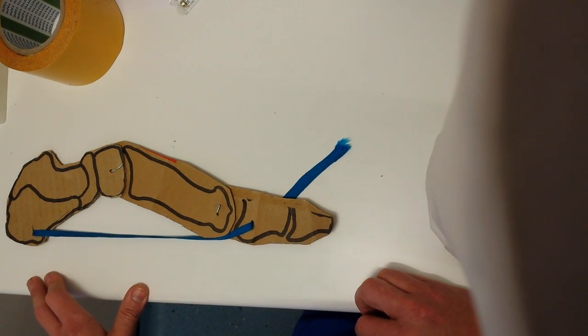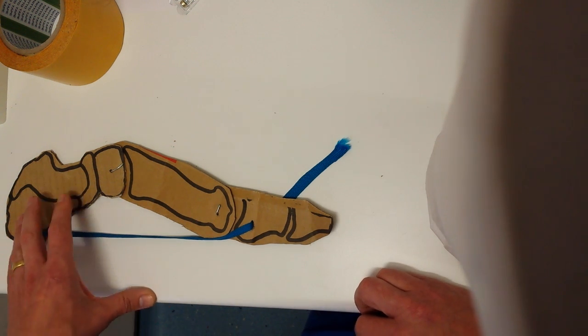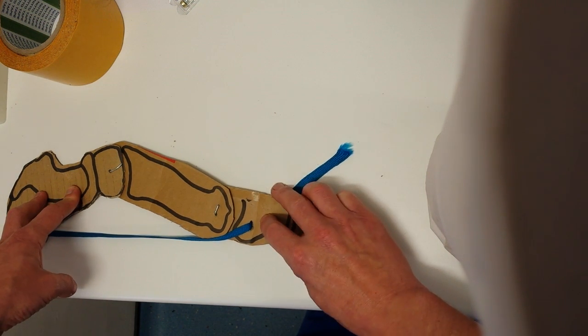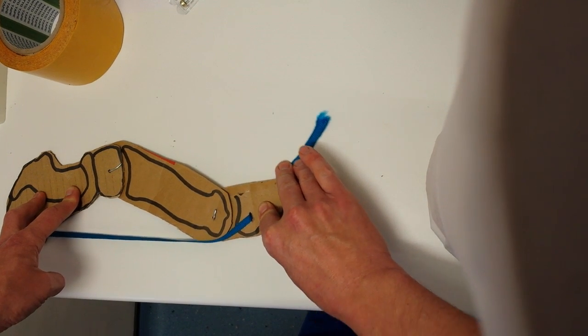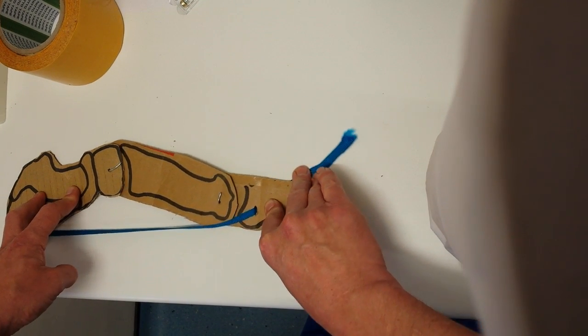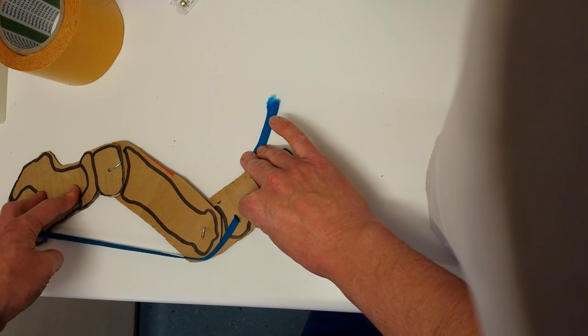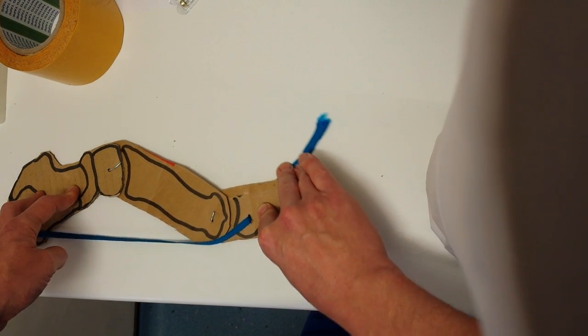The more classical test for this is the Jax test or Hubscher maneuver, which is where you have a patient stand up and very simply you put your thumb under their big toe and you try to dorsiflex their big toe. If the windlass is working well when you do this, what you'll see is the first metatarsal will plantar flex, the arch will come up, and the leg will slightly rotate outwards. So that's a good working windlass.